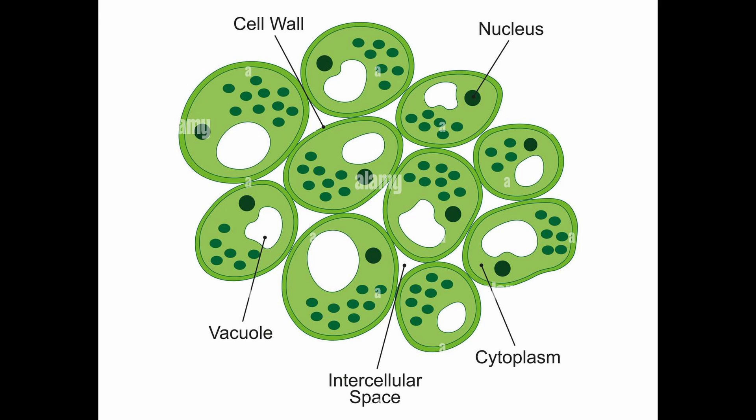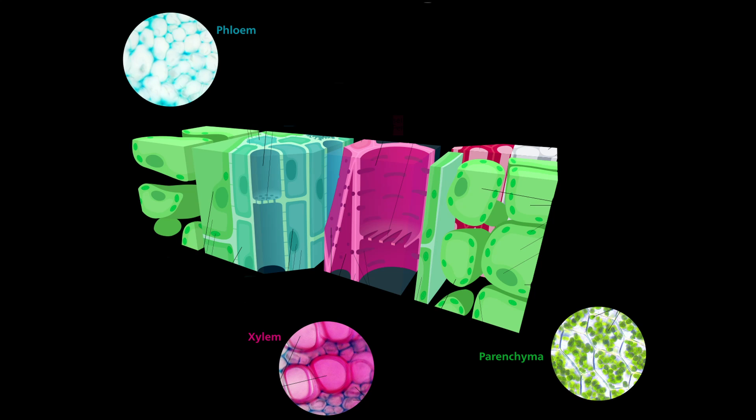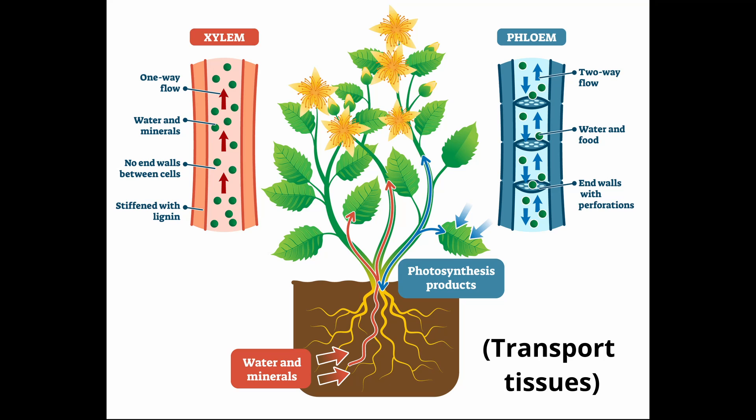If we go back to the fundamentals of what a plant is, a plant is made up of different cells and cell types. Those cells are organized into tissues which have a specific function. There are tissues called transport tissues that are responsible for moving substances throughout the plant, the two types being xylem and phloem.